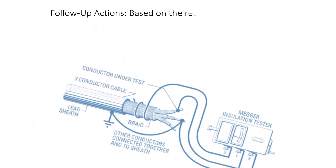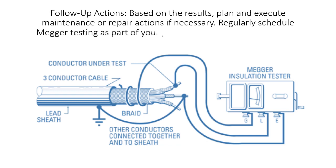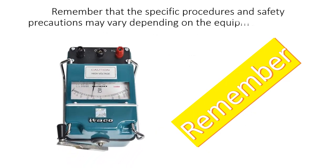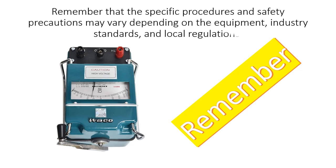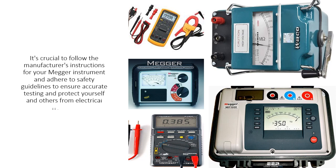Follow-up actions: Based on the results, plan and execute maintenance or repair actions if necessary. Regularly schedule mega testing as part of your preventive maintenance program. Remember that specific procedures and safety precautions may vary depending on the equipment, industry standards, and local regulations. It's crucial to follow the manufacturer's instructions for your mega instrument and adhere to safety guidelines to ensure accurate testing and protect yourself and others from electrical hazards.